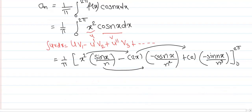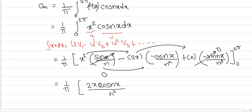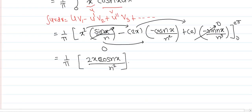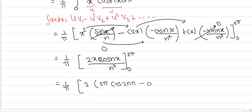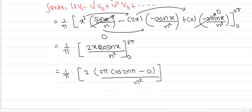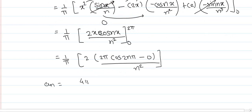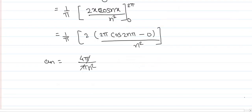For the upper and lower limits, the sine terms become 0. The remaining term is (1/π) × 2x · cos nx / n², evaluated from 0 to 2π. So aₙ = (1/π) × 2 × 2π × cos(2nπ) / n². The value of cos(2nπ) = 1, giving (1/π) × 4π/n². The π's cancel, so aₙ = 4/n².